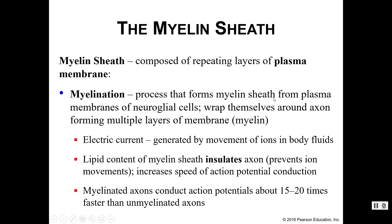Now let's finally talk about the myelin sheath. We mentioned that oligodendrocytes and Schwann cells were going to produce myelin. Let's make sure we know what myelin actually is. Basically, you are taking the plasma membrane of each neuron and wrapping it around itself.